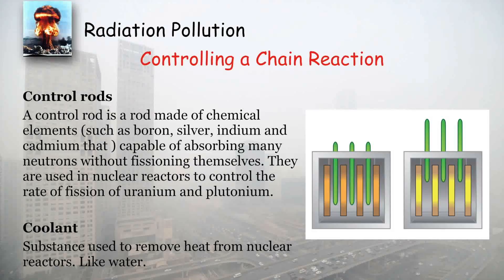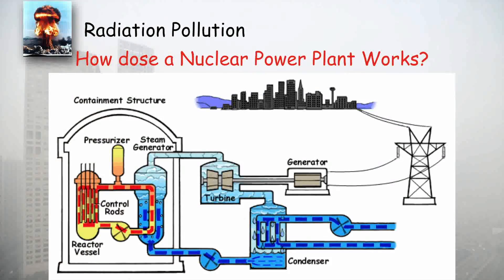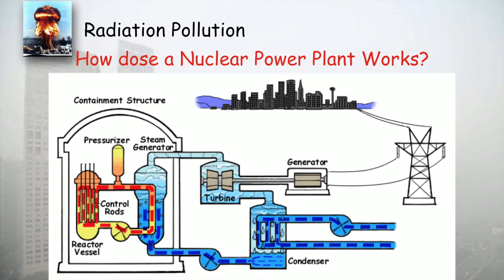In a nuclear power plant, there is a main reactor where the chain reaction happens, controlled by control rods. The heat produced in the reactor is transferred to a steam chamber, where it boils water into steam. This steam moves a turbine to produce electricity. Once it moves the turbine, the steam cools down and circulates back into the reactor. If a nuclear reaction is not controlled, a nuclear explosion is possible.